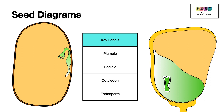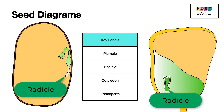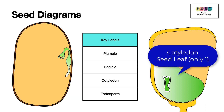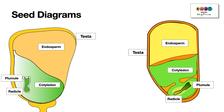Adding the key labels: the plumule will form the shoots, the radical will form the roots. In the broad bean seed there are two cotyledons but only one is visible, whereas in the maize seed there's only one cotyledon and the rest of the seed is taken up by the endosperm. For monocot seeds, remember the one cotyledon, plumule, radical, endosperm, and the testa, the outer coating of the seed.